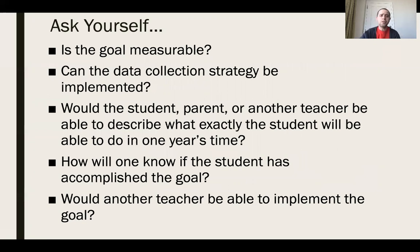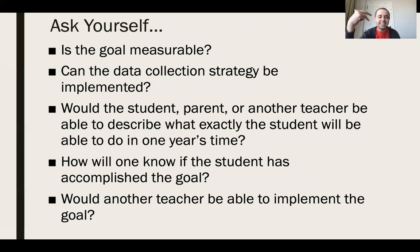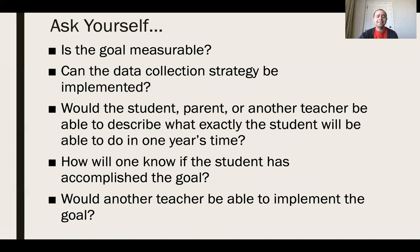As we wrap up, ask yourself: is this goal measurable — can we collect data on it? Would the student, parent, or any other teacher be able to see exactly what the student will do in one year's time? Is it clear enough? How will one know if the student has accomplished the goal — what does the end point look like? And would someone else be able to come in and implement that progress monitoring strategy? Everyone has inherited an IEP where a poorly written goal made progress monitoring impossible — so always write goals clearly enough that any other teacher could implement them.